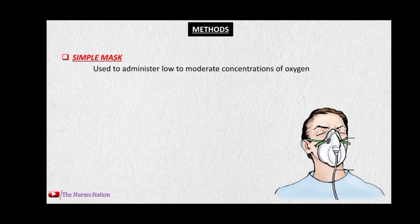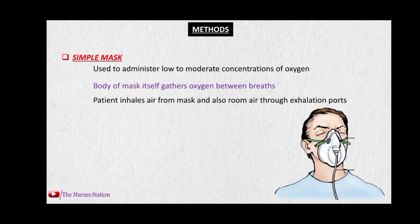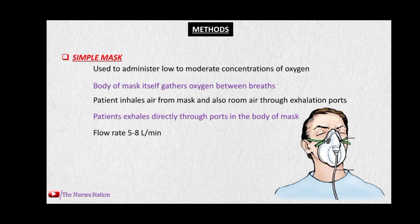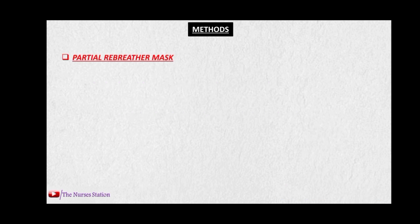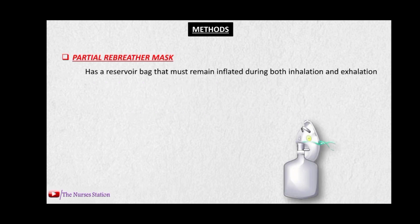The next method is the simple mask, as you may have seen in hospitals where many patients are wearing masks to get extra oxygen. It is used to administer low to moderate concentrations of oxygen. The body of the mask gathers oxygen between breaths, and the oxygen comes from the source through a pipe connected to the mask. When the patient inhales, air comes from the oxygen source and also from room air through the exhalation ports. The patient exhales directly through the ports. The flow rate is 5 to 8 liters per minute.